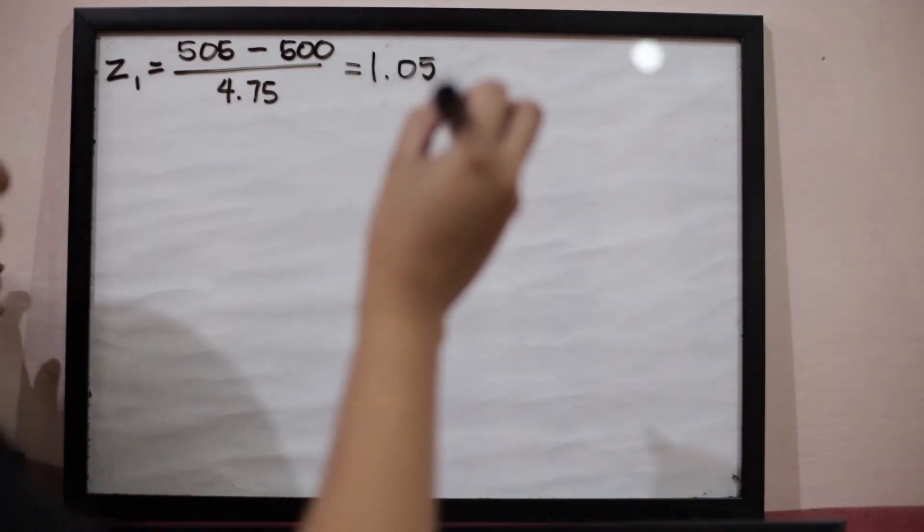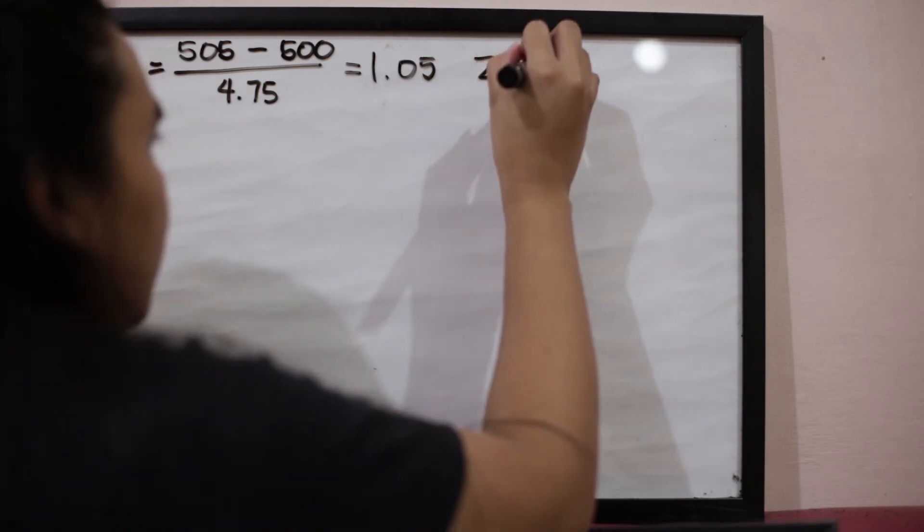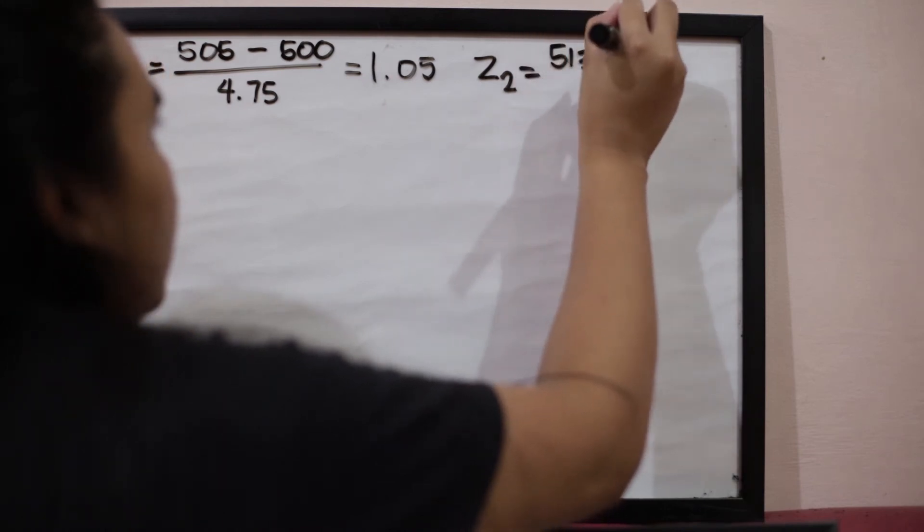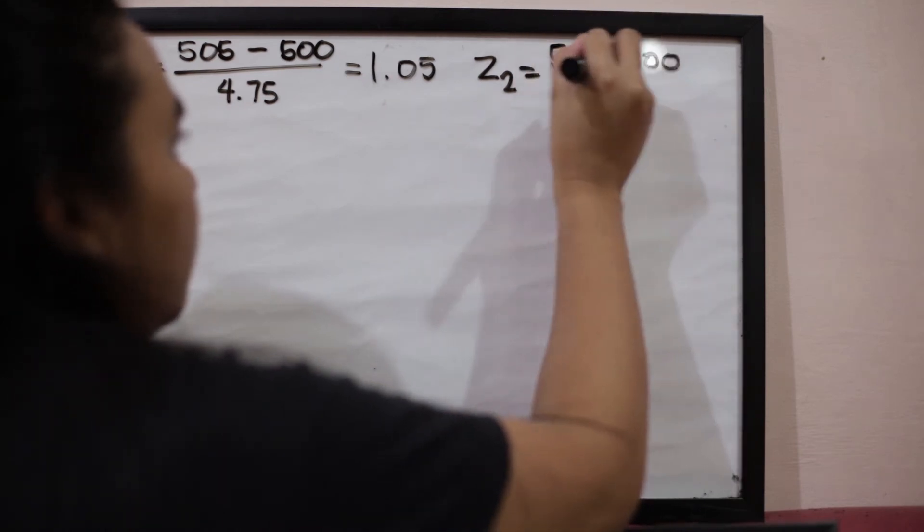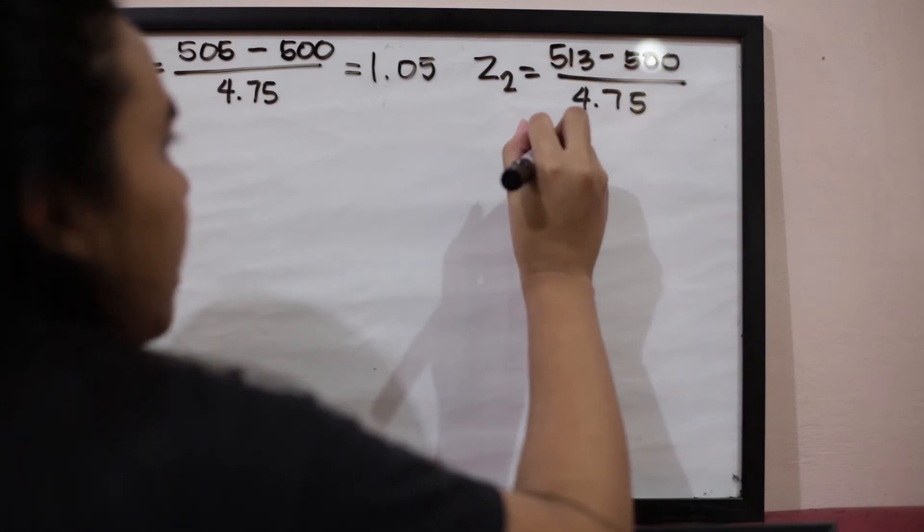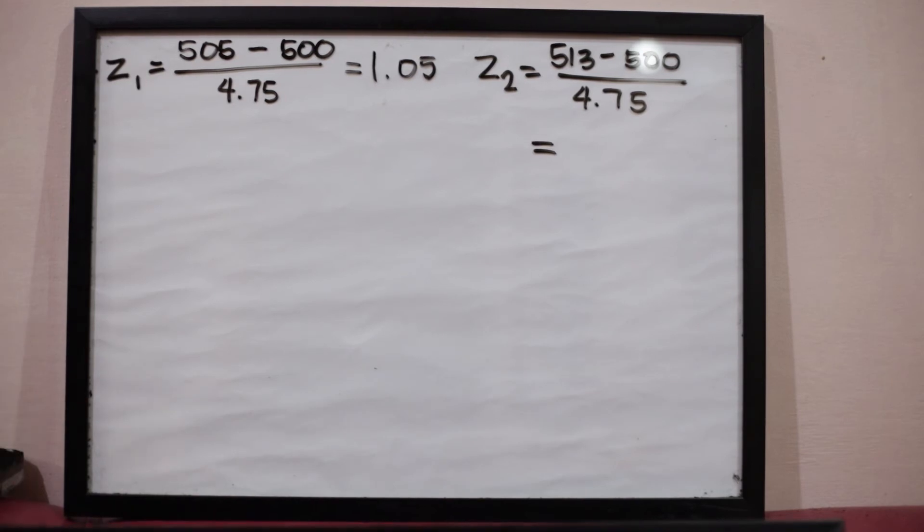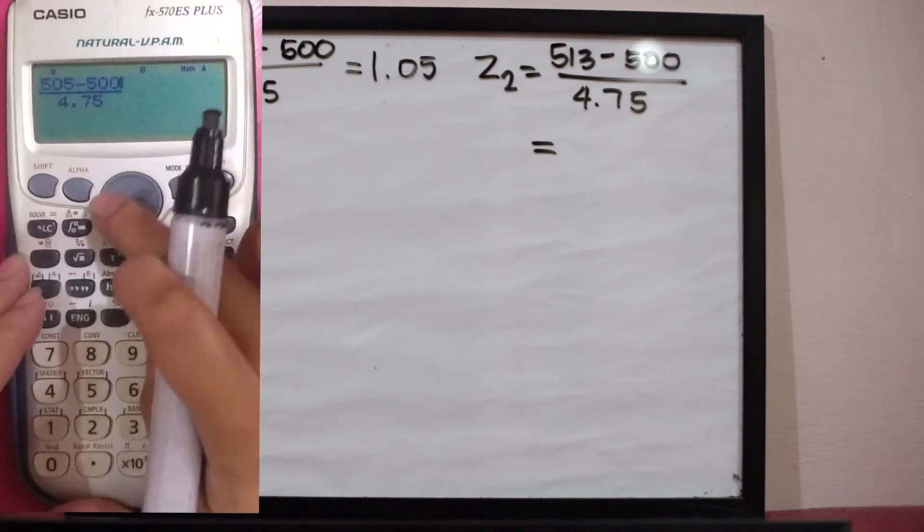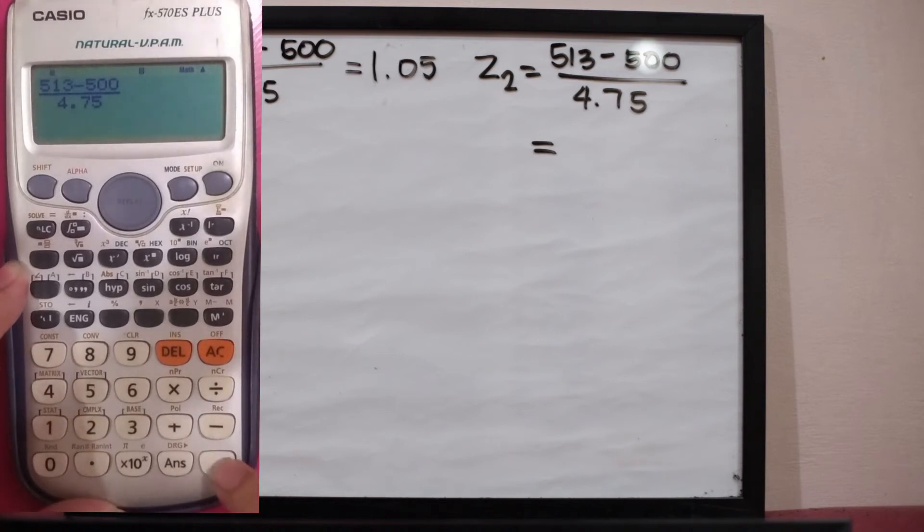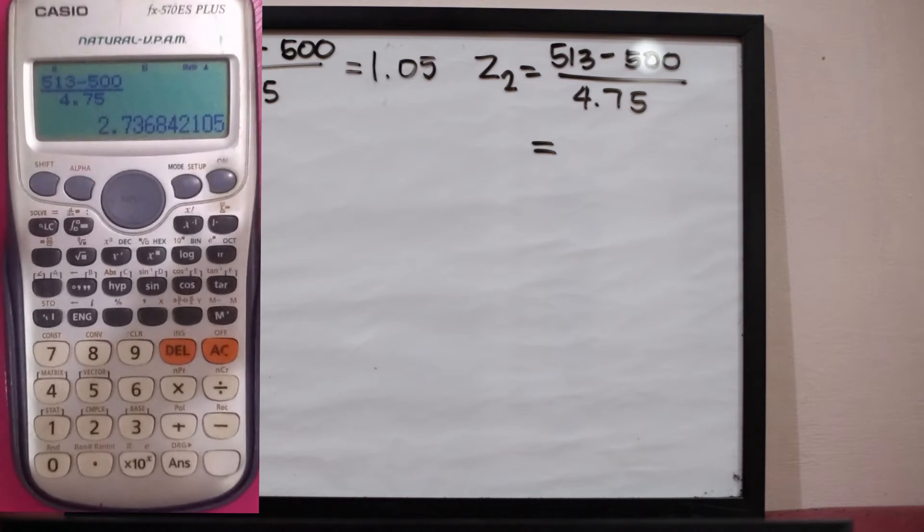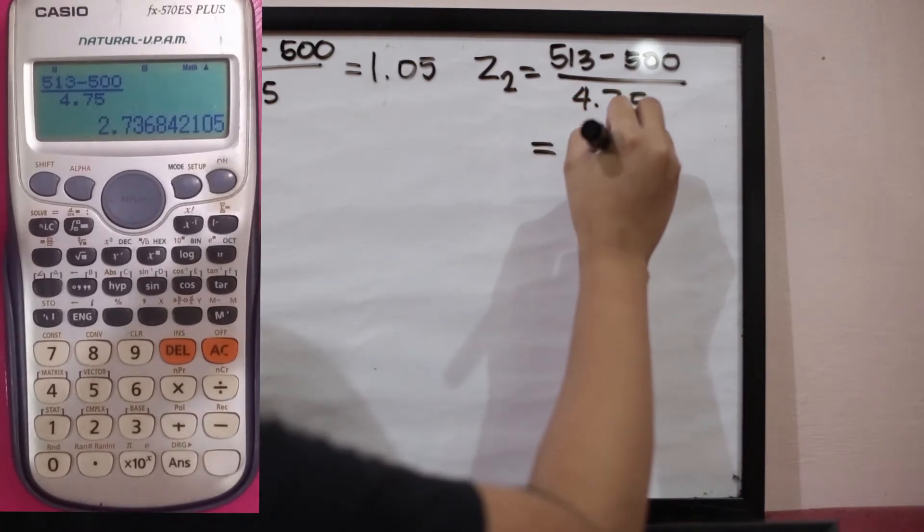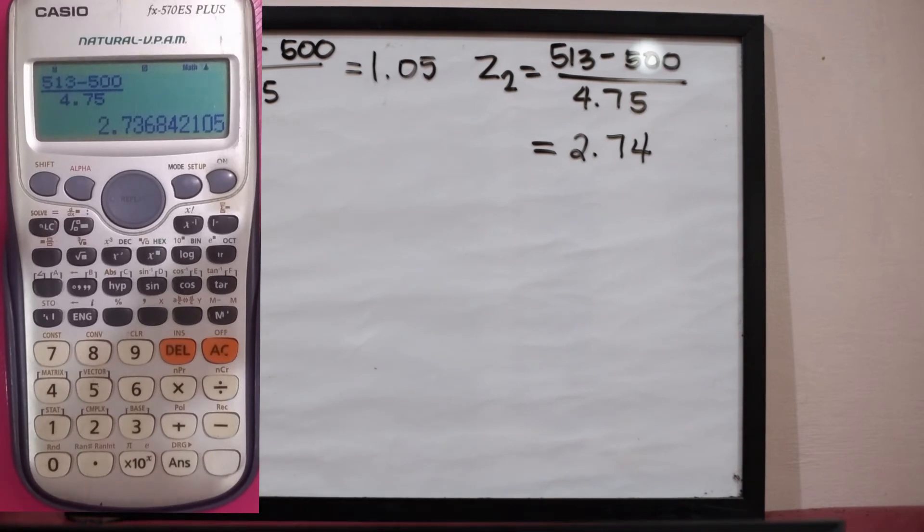For the second z-score, which is 513 minus 500 all over 4.75. The z-score for this one is 513 minus 500 all over 4.75. The answer is 2.74.